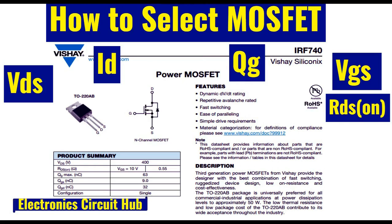Let us say you want to select a MOSFET for your application of 1 ampere. How will you select the MOSFET? Let us say your application is 1 ampere and you have drain-to-source voltage of 10 volt or 12 volt. How will you select the MOSFET for this application? I will explain this later. First let us understand the different terminology used in MOSFET selection.